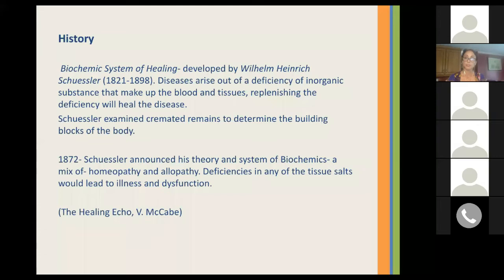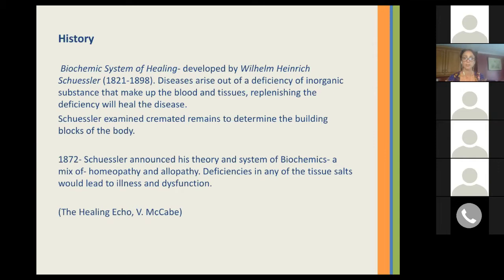Then there was Wilhelm Heinrich Schussler, who lived in the 1800s and developed what we know as cell salts, also known as biochemics. He developed it as a system of healing, similar to homeopathy, and thought that disease arose out of a deficiency of inorganic substances that made up the blood and tissues. To determine which substances should be included, he examined cremated remains to identify the building blocks of the body — that's how he came up with the 12 cell salts. In 1872, Schussler announced his theory, which he called biochemics — a kind of mixture of homeopathy and allopathy.